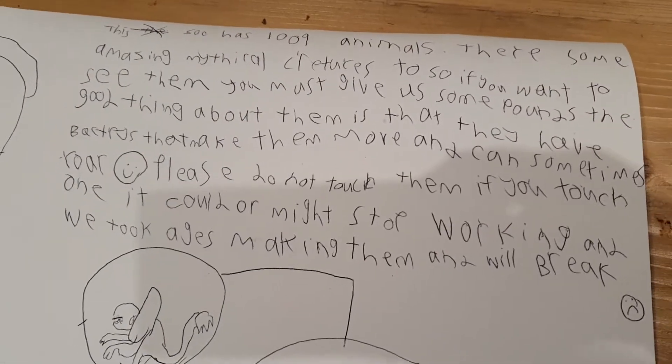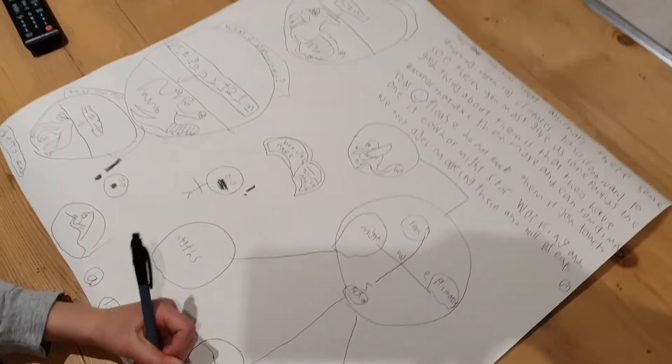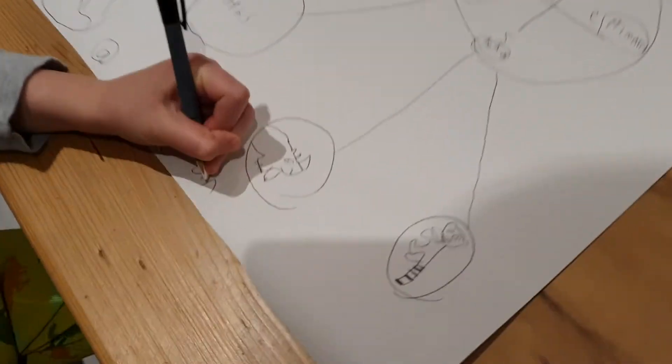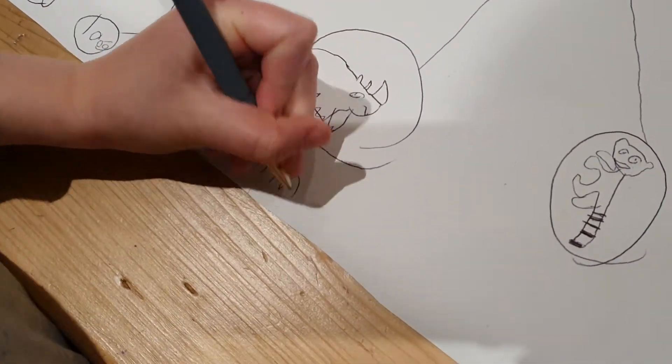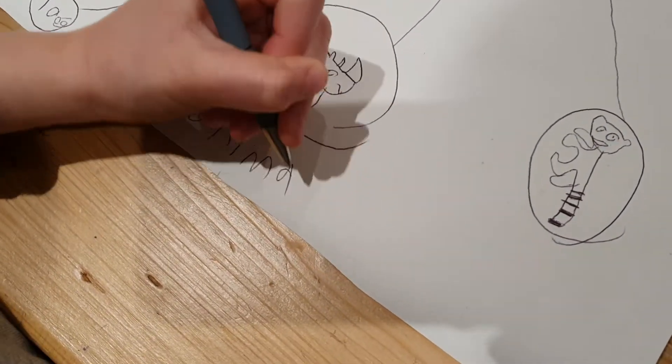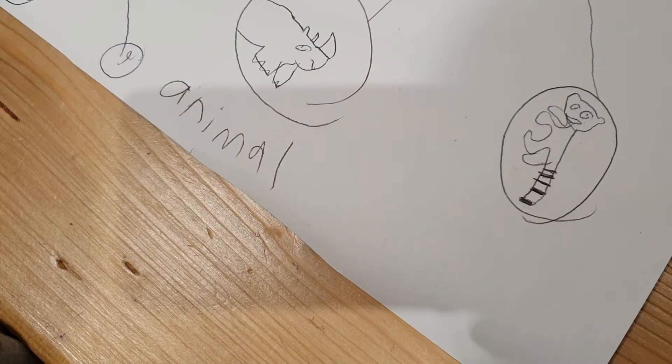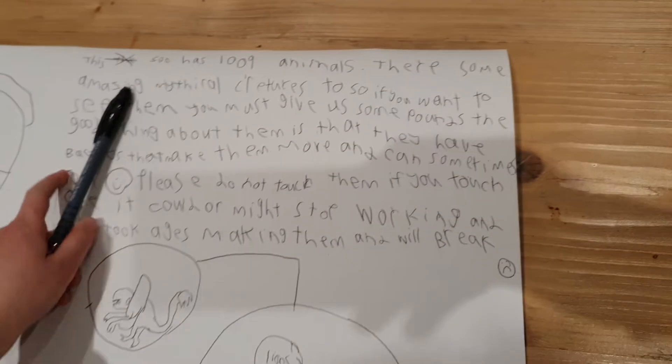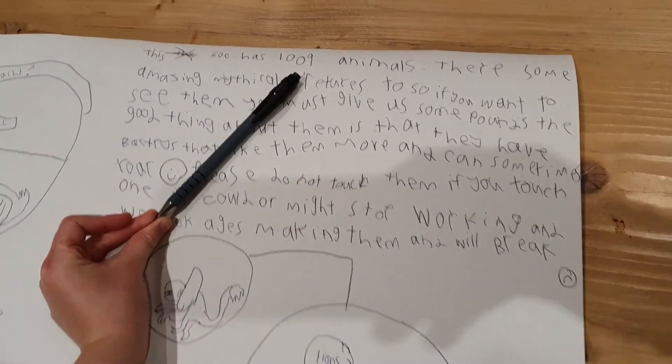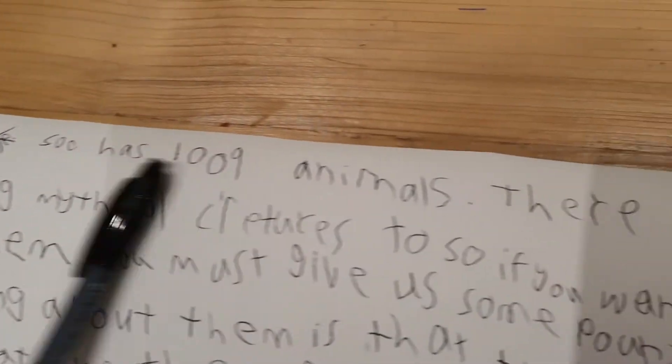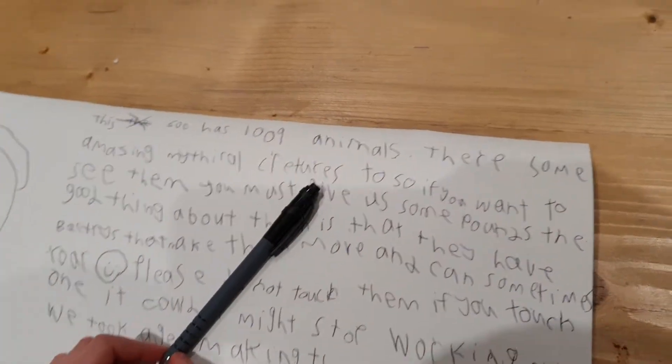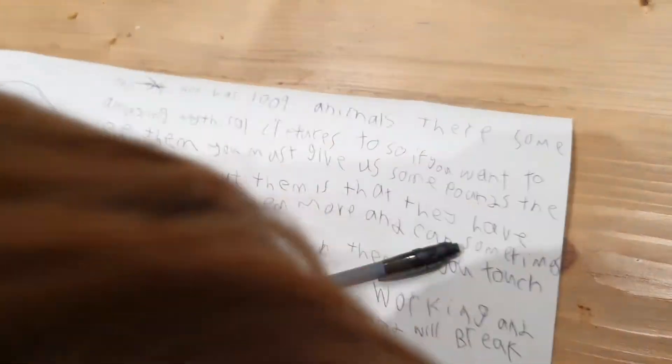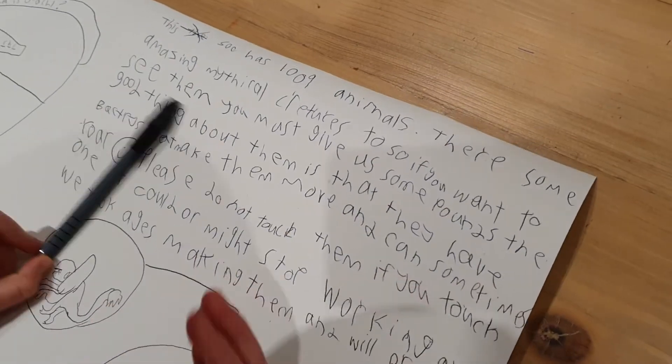This is my picture and I'll write the word animal down here. And here is a sentence: This zoo has 1,000 annoying animals. There are some amazing mythical creatures too, so if you want to see them you must give off some pounds. The good thing about them is that they have batteries that make them move.